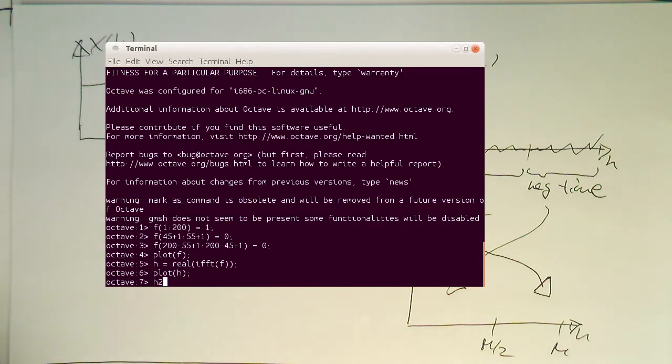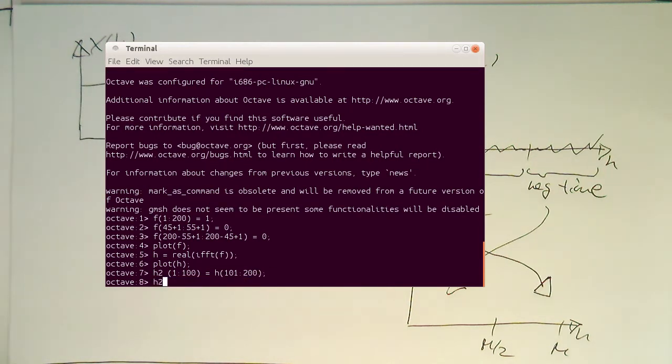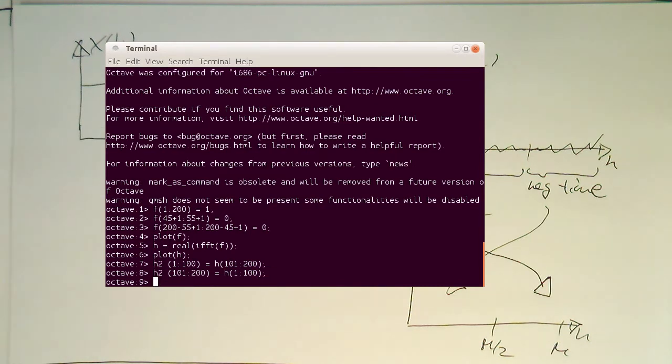So let's do that now in our filter design here. So what we need to do is, let's call this here h2. And so the first bit here 1 to 100. So the first half gets its components from the second half. And then the second half obviously gets its components from the first half. So 100. So let's plot that h2.